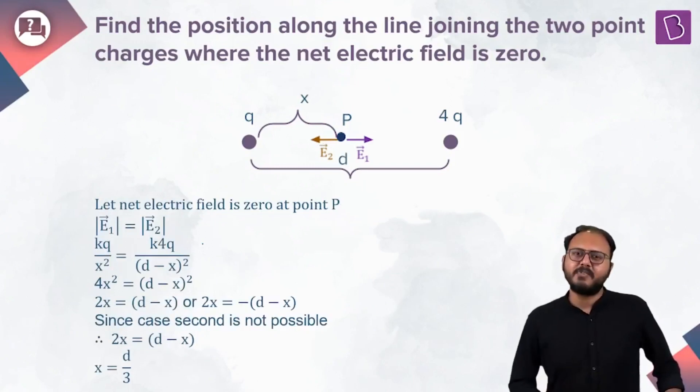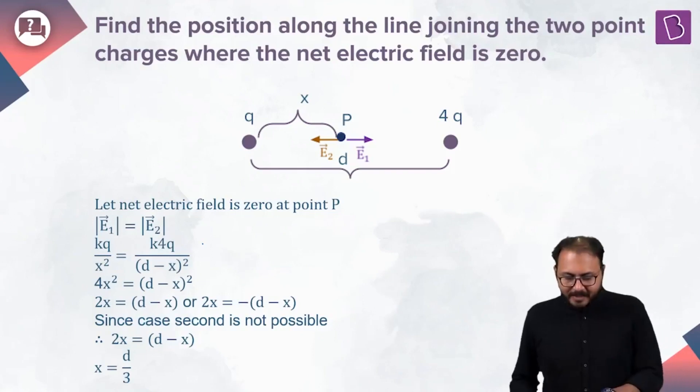The most satisfying part now: two unequal positive charges, Q and 4Q. By equating their magnitude, KQ by X square equals K4Q by (D minus X) whole square. When I solve this simple quadratic, what do I get?